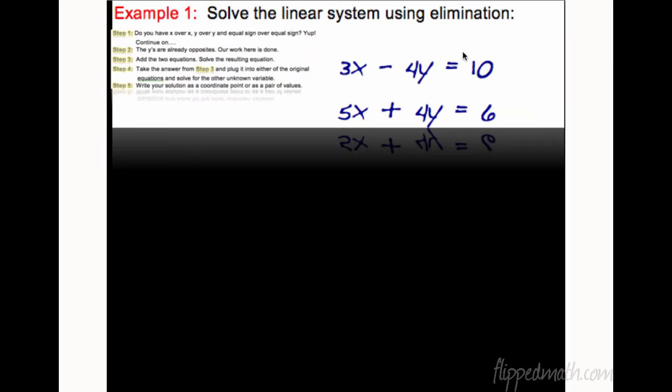So here's the first example. Solve the linear system using elimination. We have 3x is over 5x. I'm looking at the first step. Do you have x over x and y over y? You're lining everything up. The x is over the x, the y is over the y, the equal sign is over the equal sign, and the constant is over the constant. It has to be lined up like that, or you cannot do elimination.